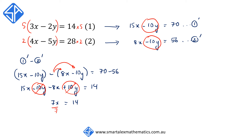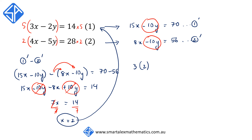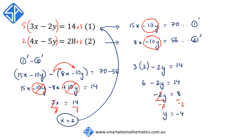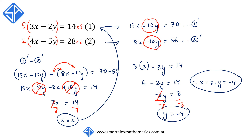Dividing both sides by 7, we get x is equal to 2. Substituting x back into the first equation, we have 3 times 2 minus 2y is equal to 14, so 6 minus 2y is equal to 14, giving negative 2y is equal to 8. Dividing both sides by negative 2, our answer is y is equal to negative 4. So x is equal to 2 and y is equal to negative 4 as our solution to this simultaneous equation.